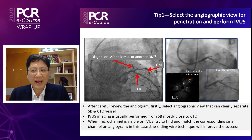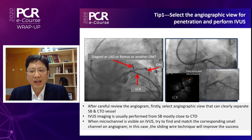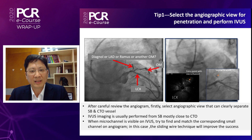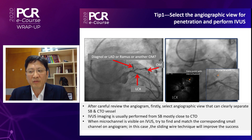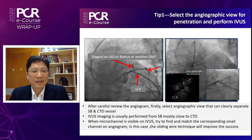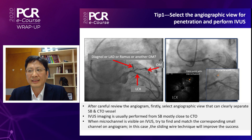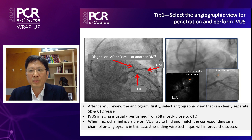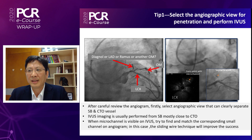First, we select the angiogram view for penetration and to perform IVA. If you look at the left case, you can see it's difficult to detect the entry point for CTO. So after careful review of the angiogram, we select the angio view to clearly separate the side branch and CTO vessel. IVA imaging is usually performed from the side branch that is closest to the CTO.